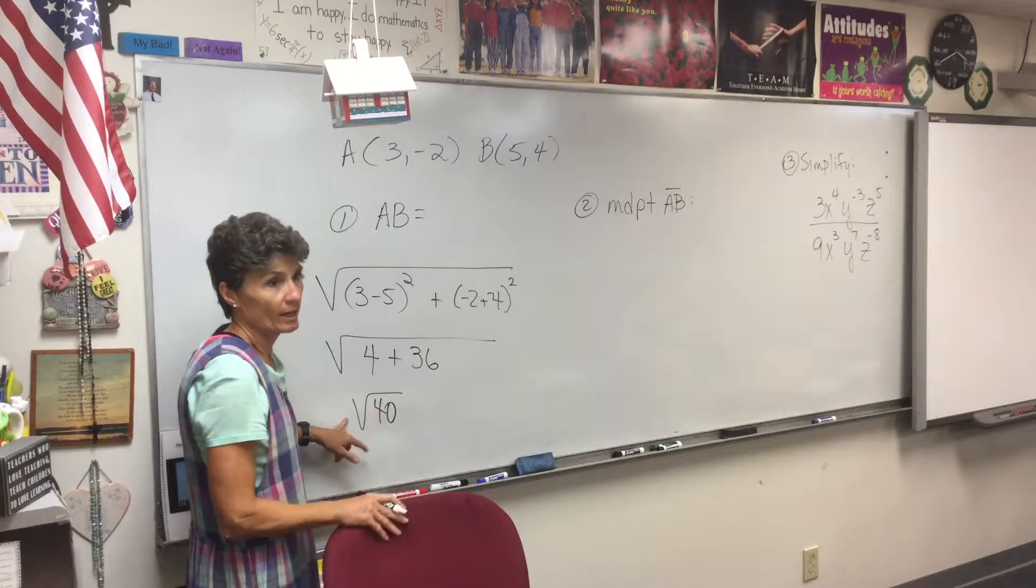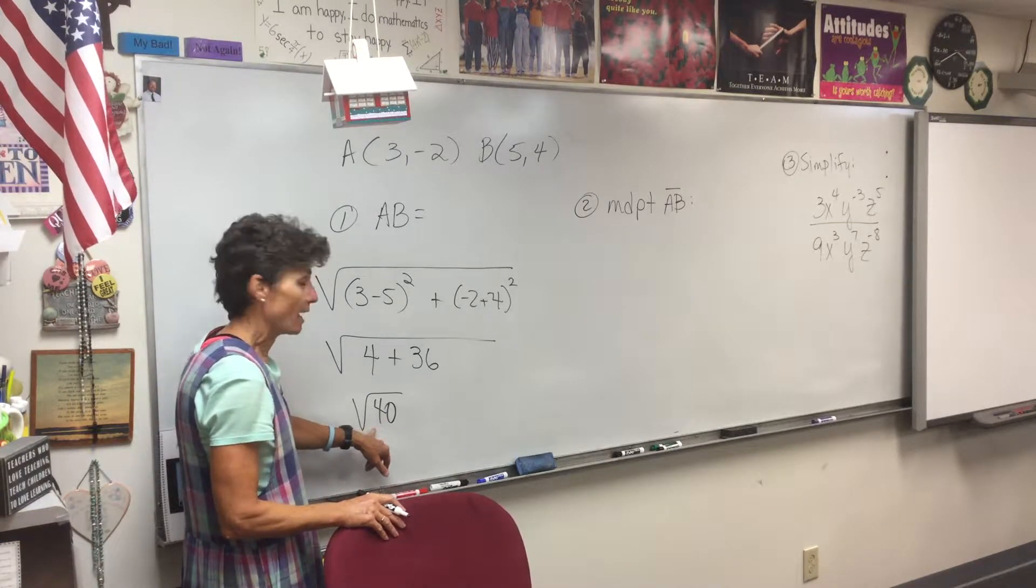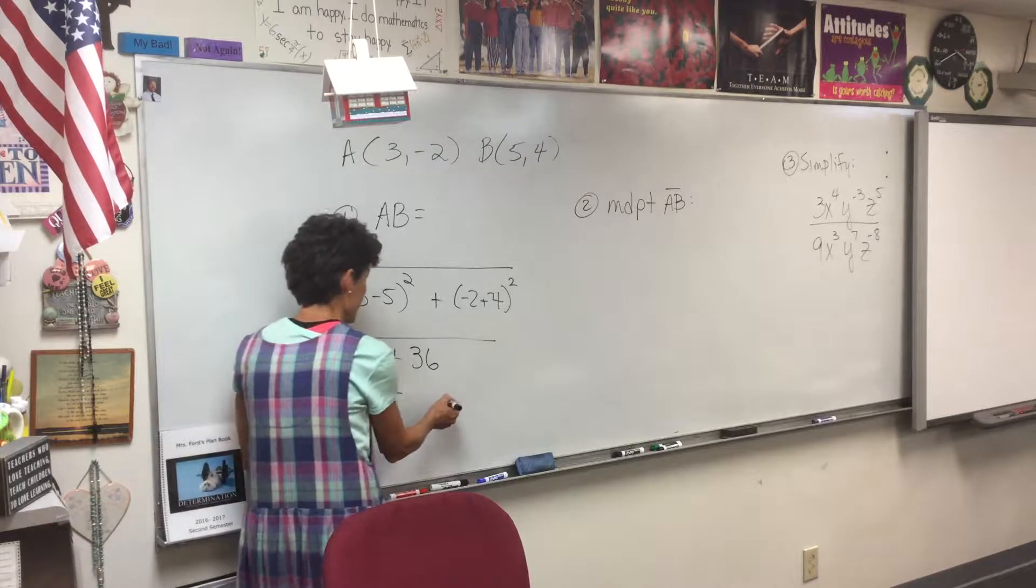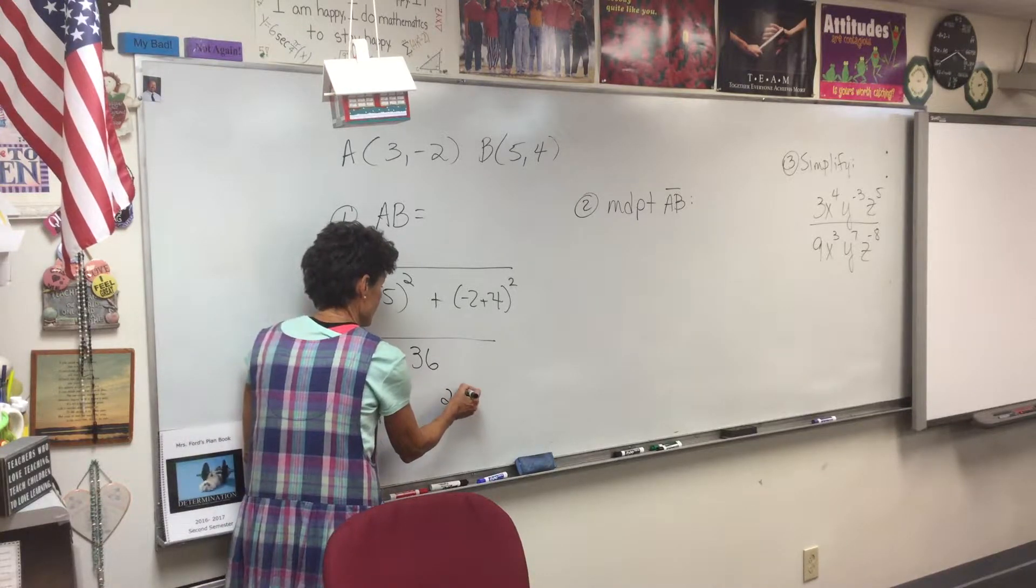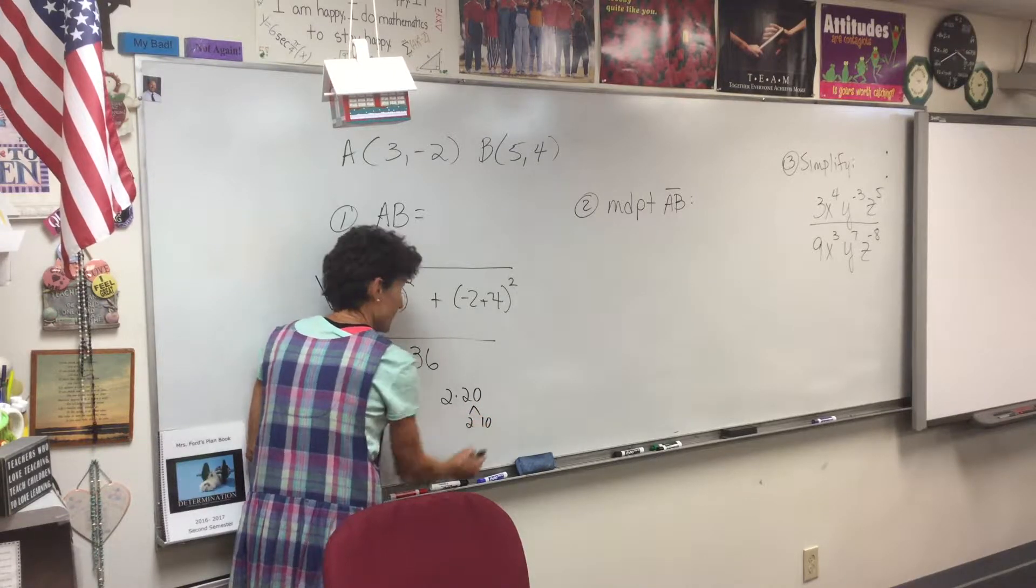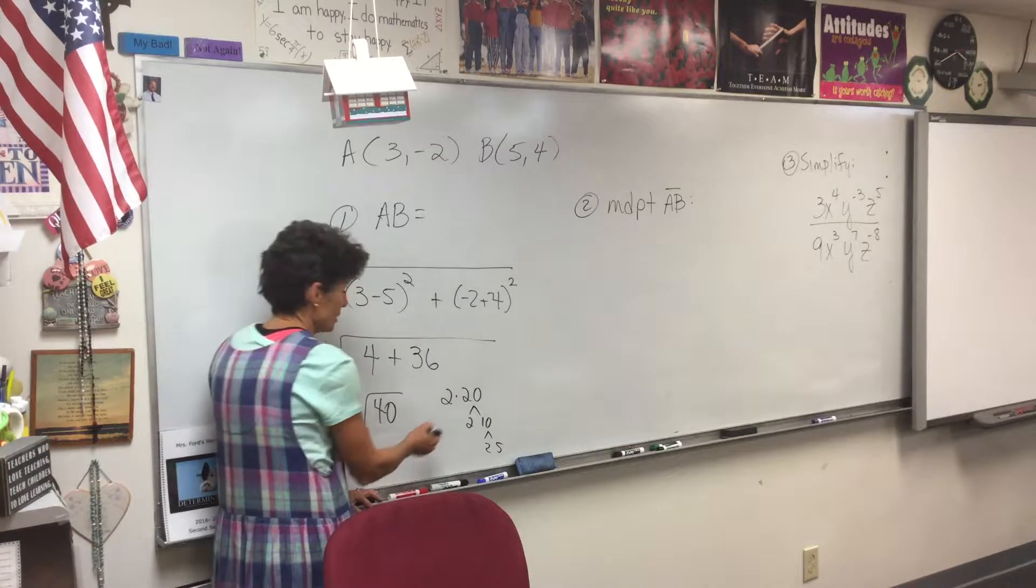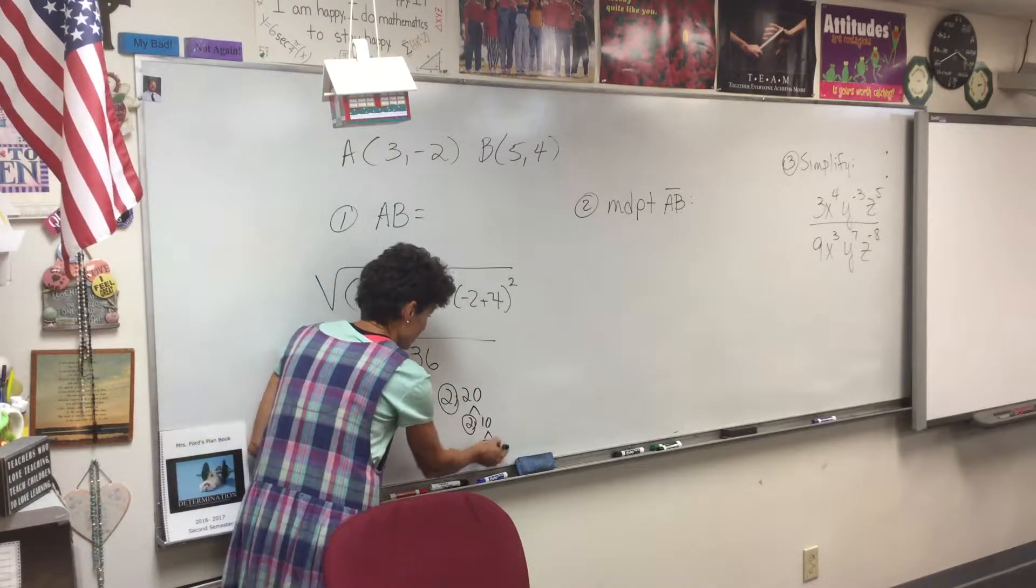And that's going to be worth partial credit, most of the credit, but you're going to lose a little, half a point, if you don't recognize that 40 is 2 times 20, which is 2 times 10, which is 2 times 5. So we have a 2, a 2, a 2, and a 5.